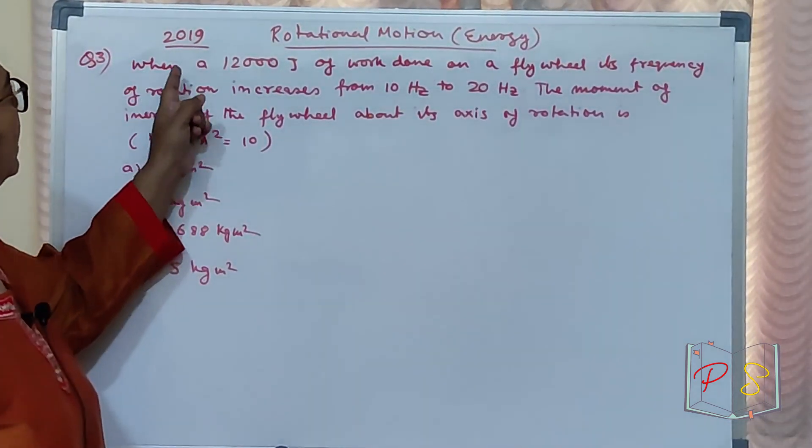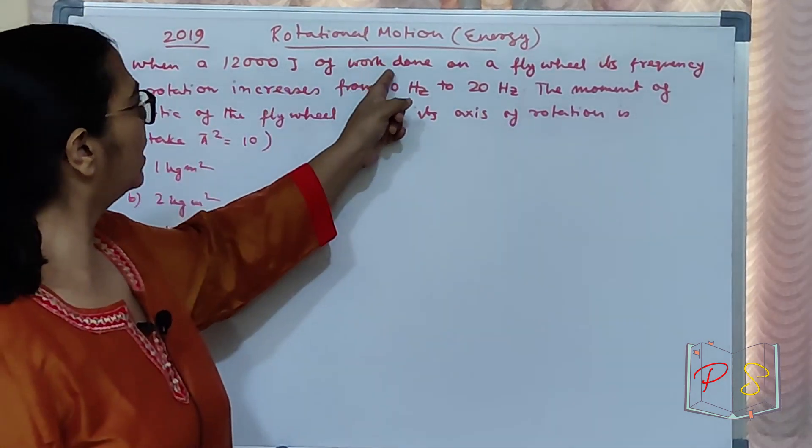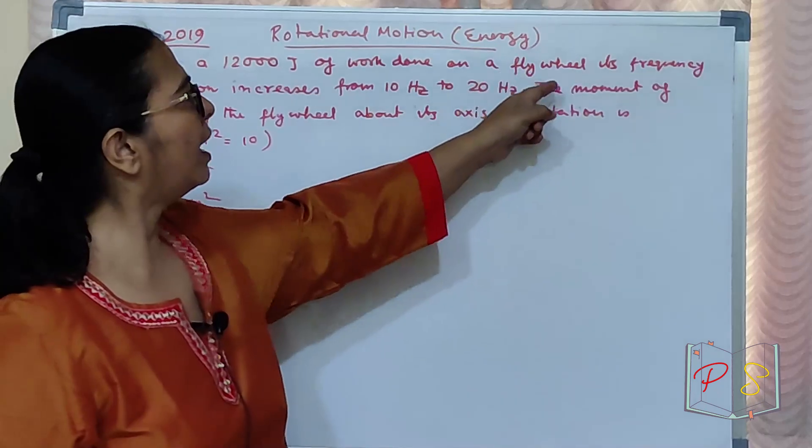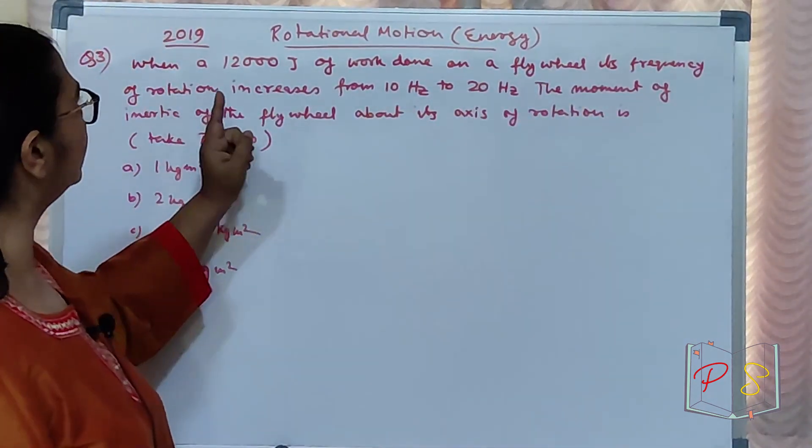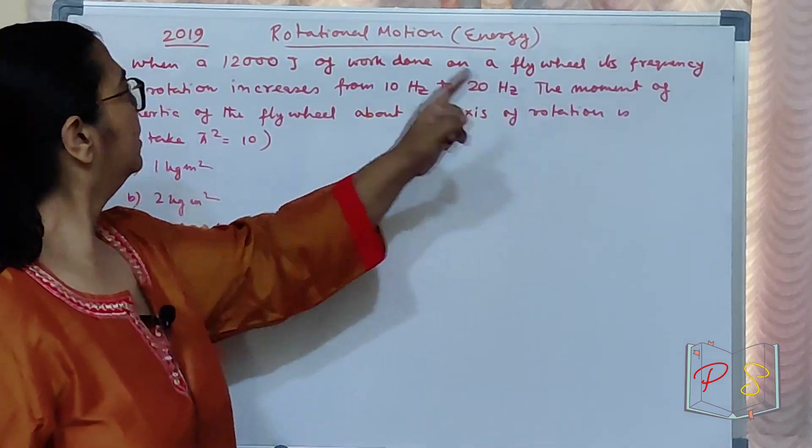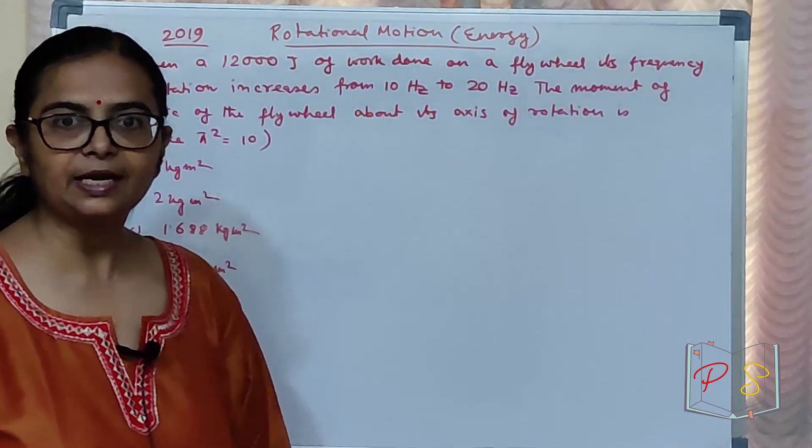So, when work done on a flywheel, its frequency of rotation increases from 10 hertz to 20 hertz. The moment of inertia of the flywheel about its axis of rotation is.